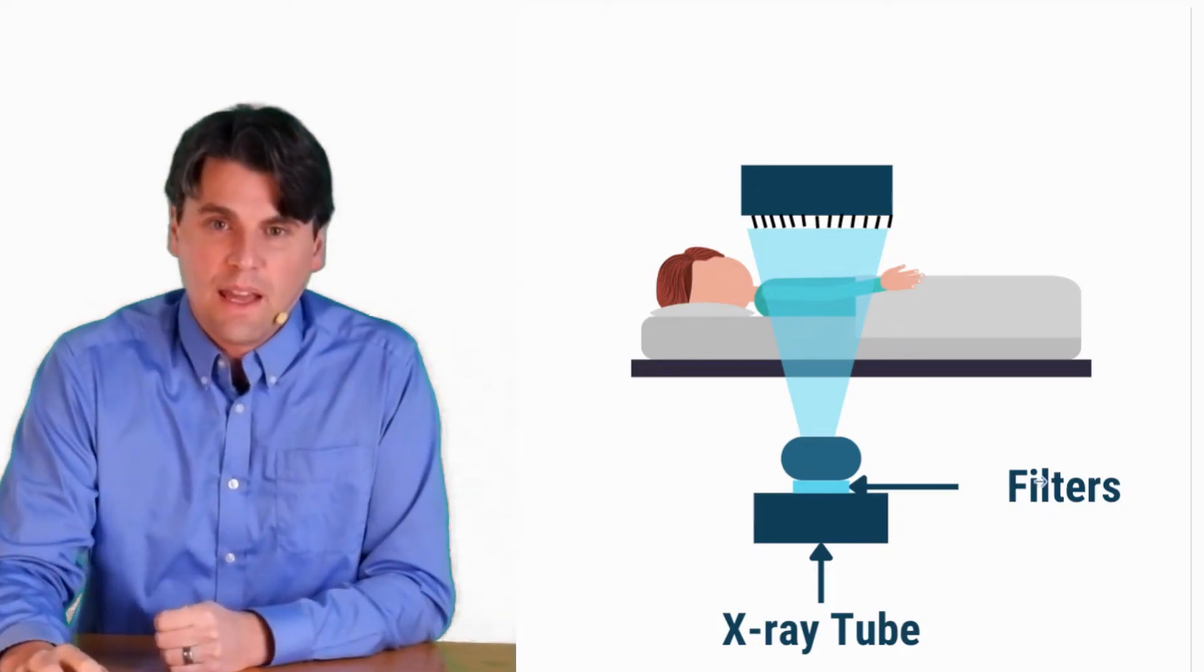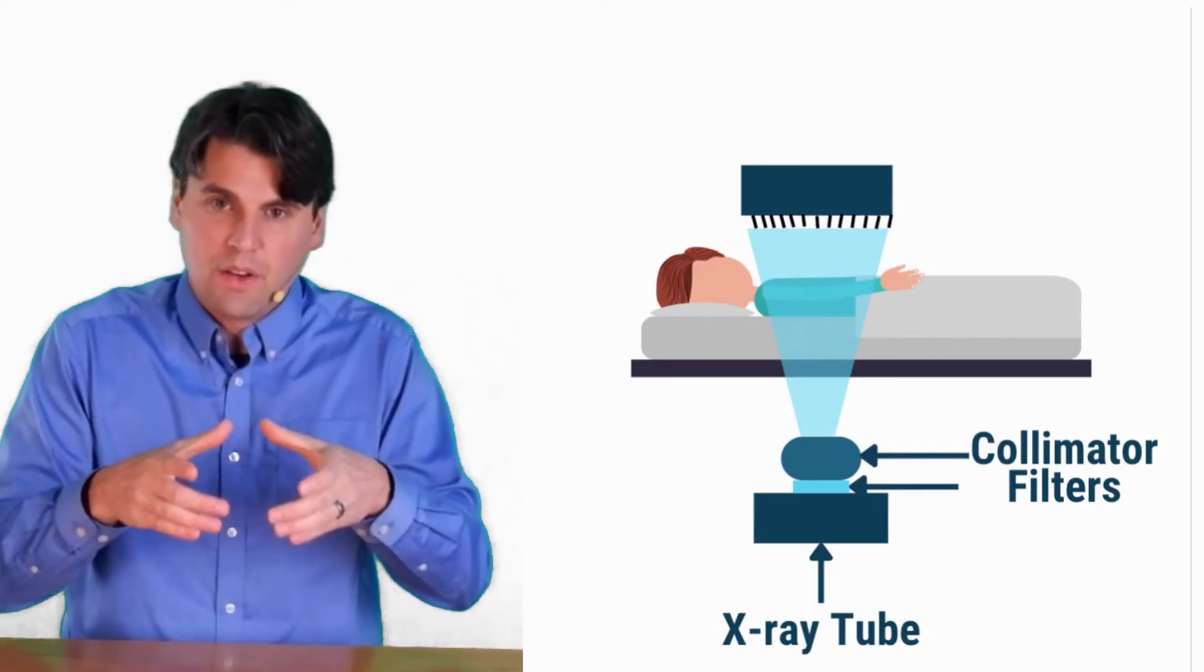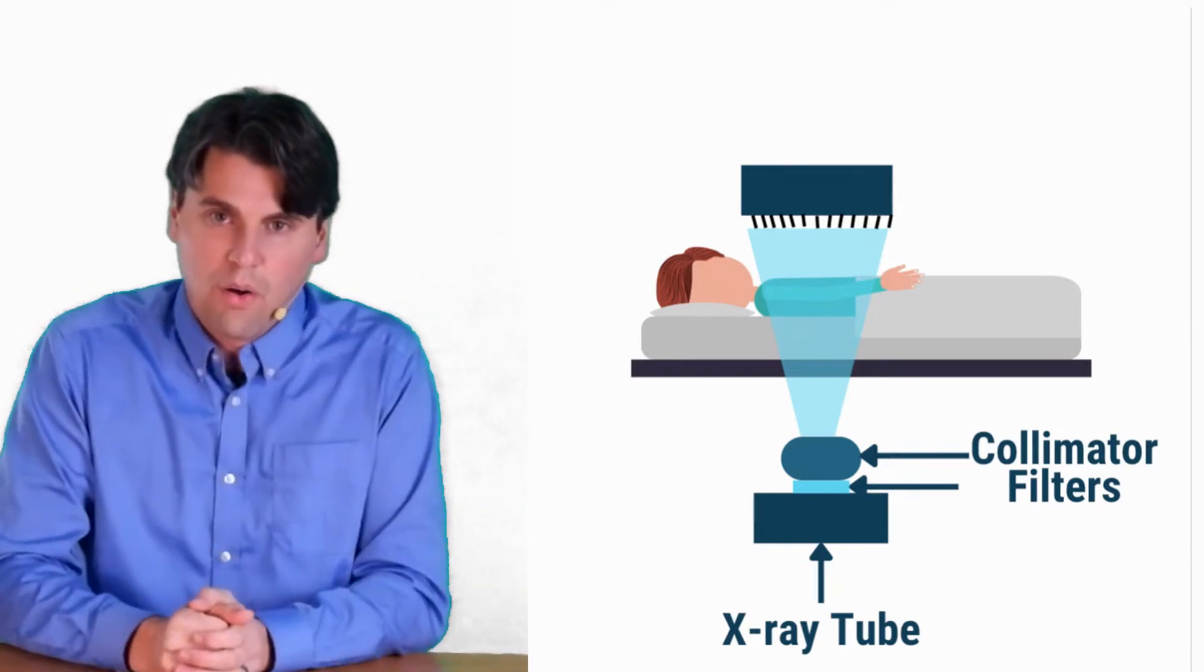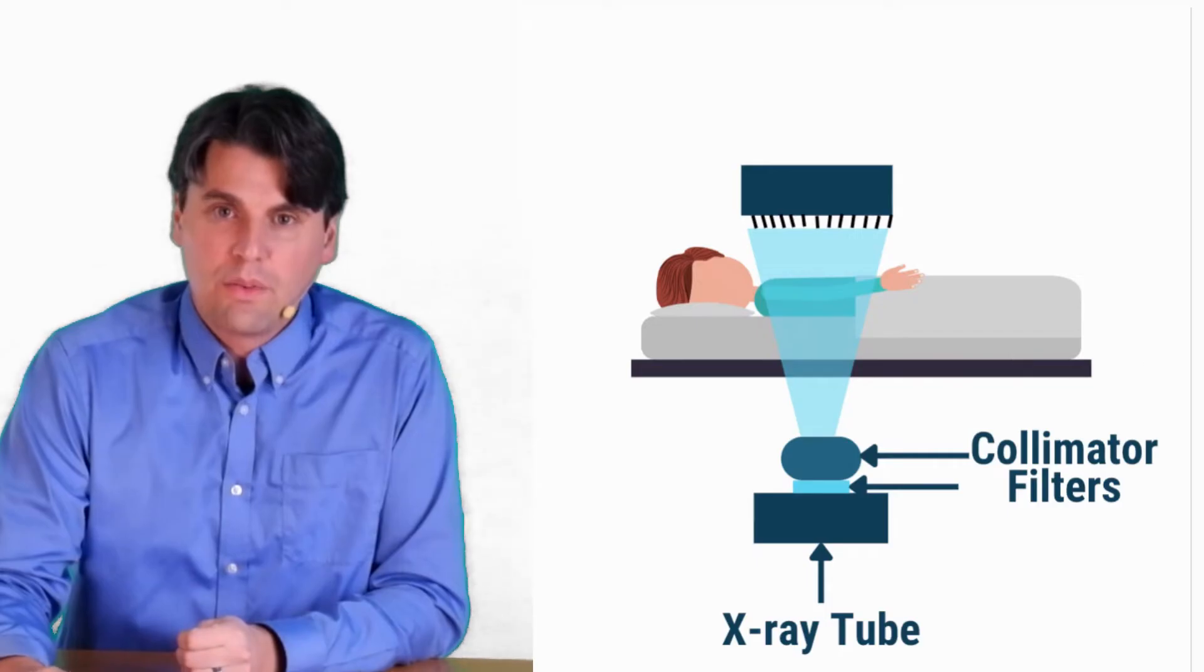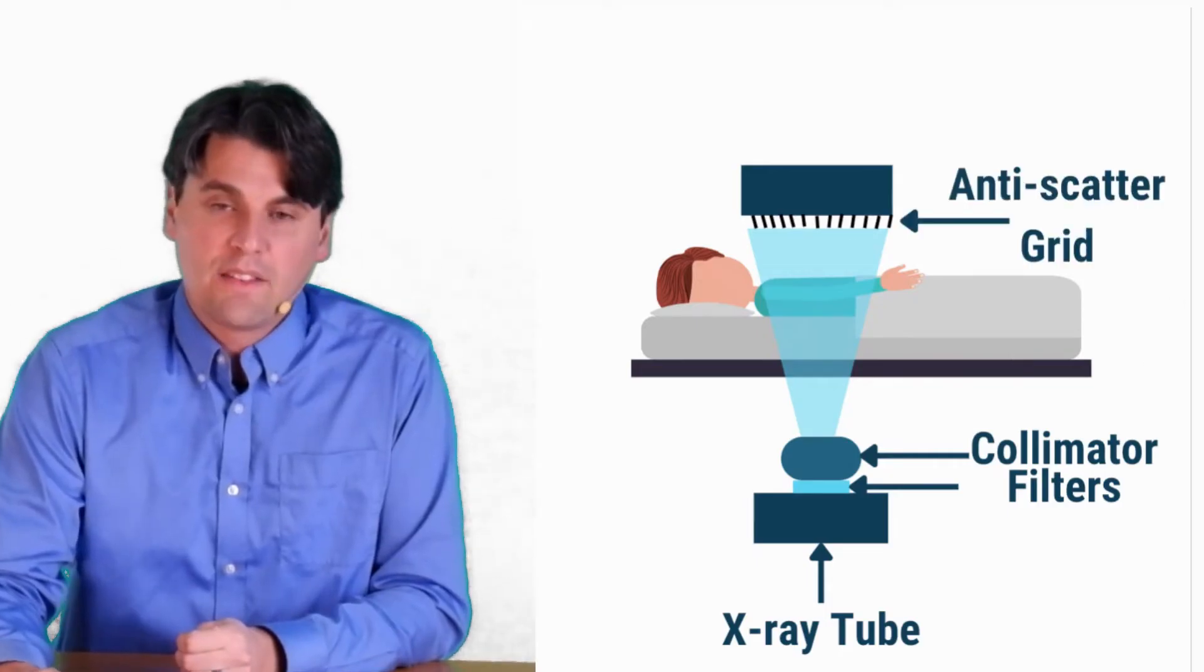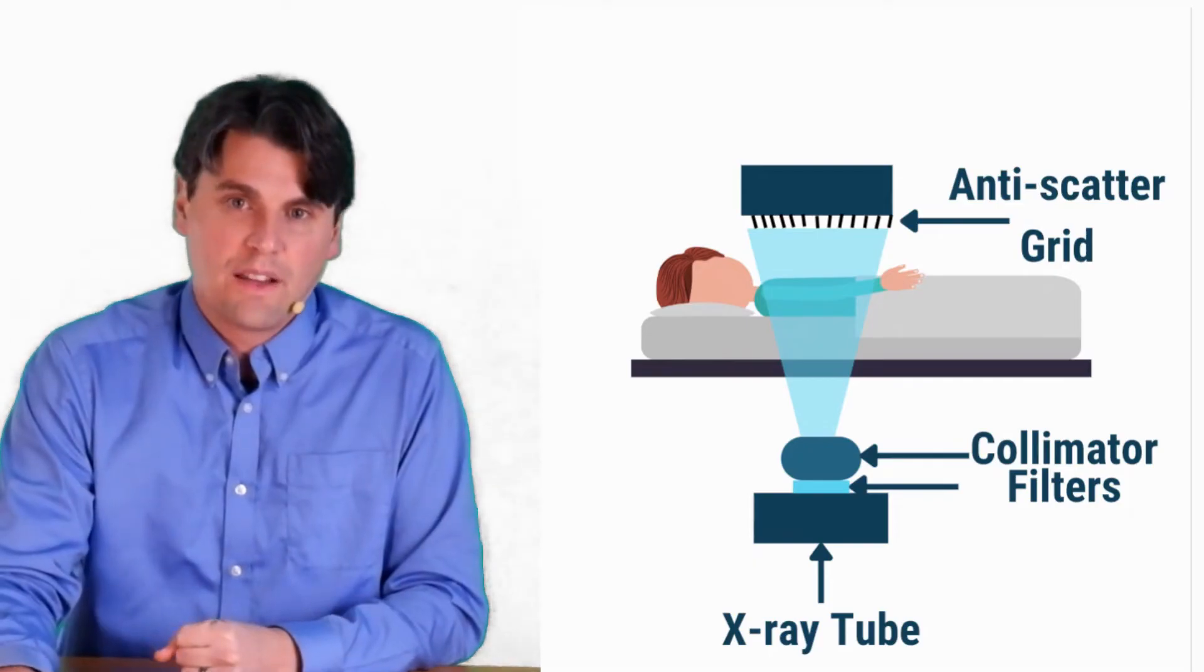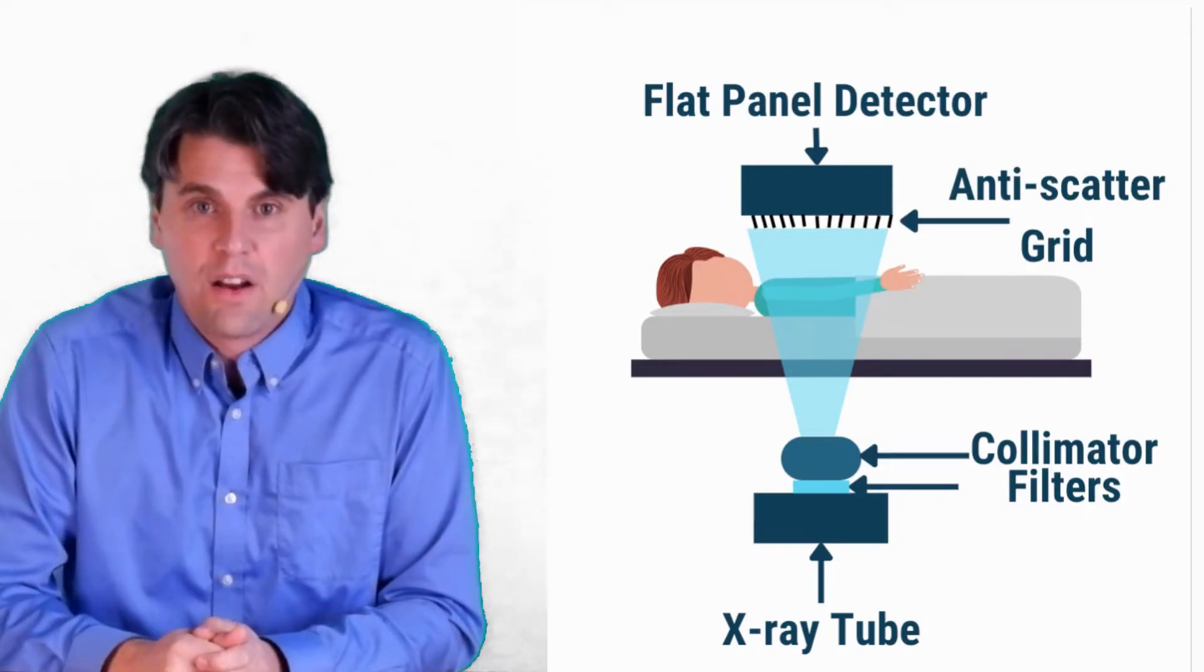And then there's going to be a collimator, which is going to actually block down and make sure that you're not irradiating more than the region that you'd like to show on the image receptor. The x-rays will then pass through the body, they'll then pass through an anti-scatter grid. If you have an anti-scatter grid on your system to try and reduce the influence of scatter.